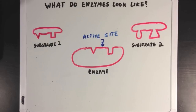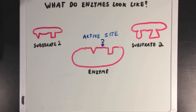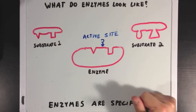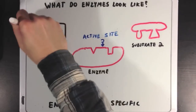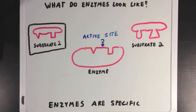Just to clarify, I've referred to the active site as both of the notches found on the enzyme, and not the space in between them. Of the two substrates I've drawn, the enzyme will only be able to bind to substrate 1, since they fit together like puzzle pieces, whereas the shape of substrate 2 isn't going to fit nicely in the enzyme's active site. Since enzymes have unique active sites, we say that enzymes are specific to certain substrates, and by extension, certain reactions.